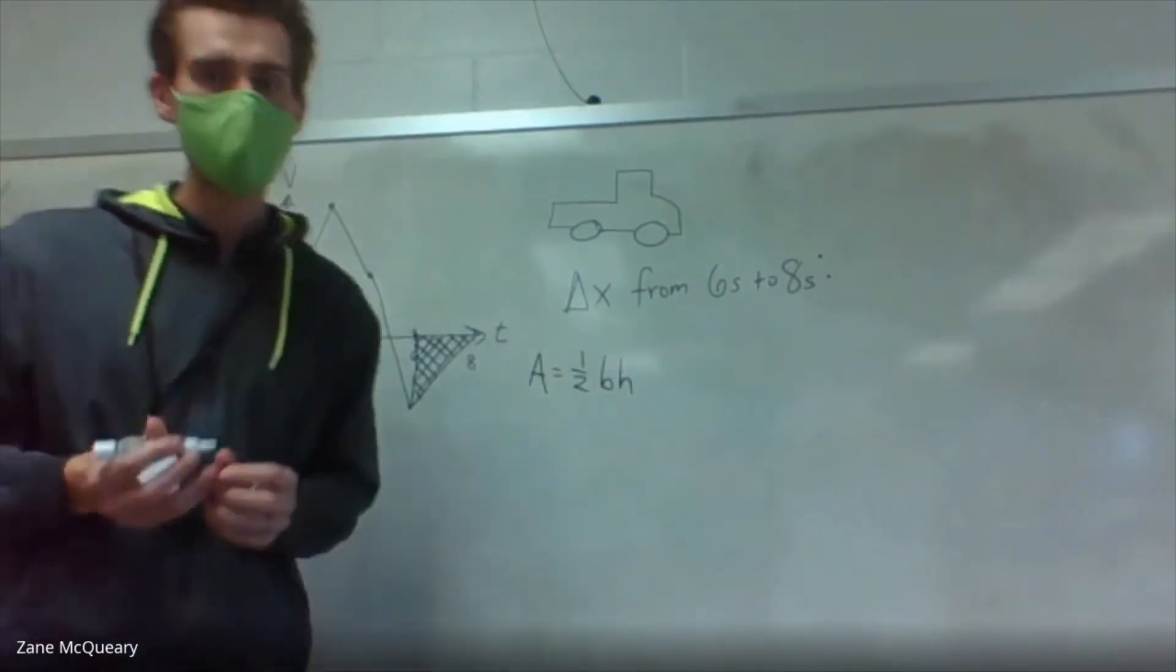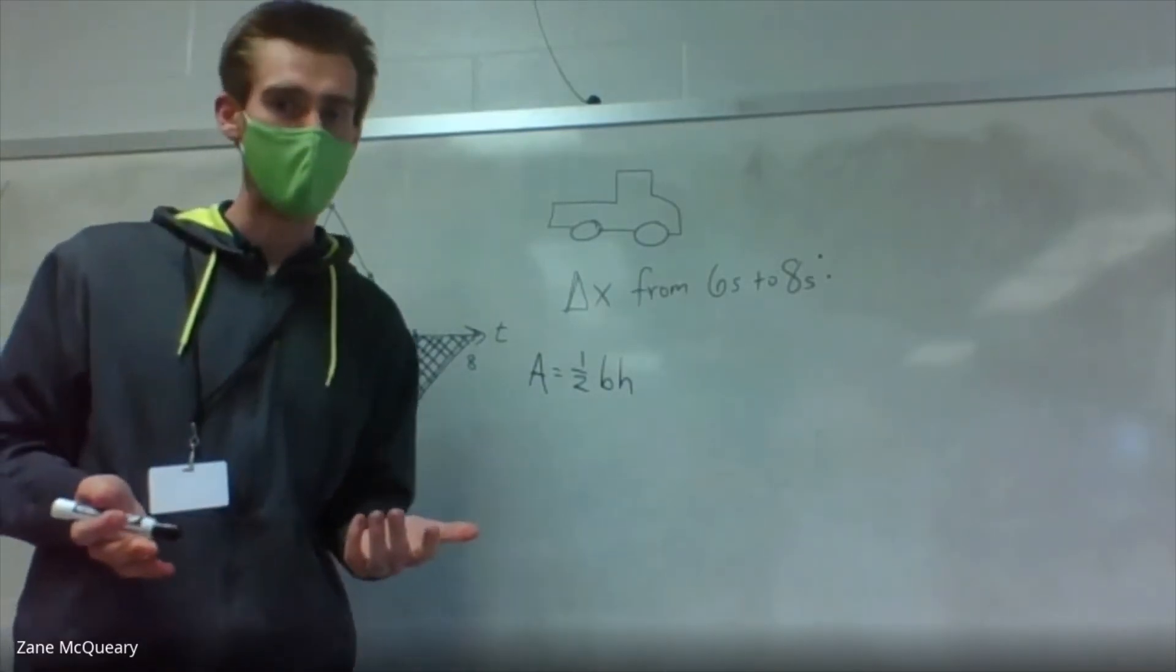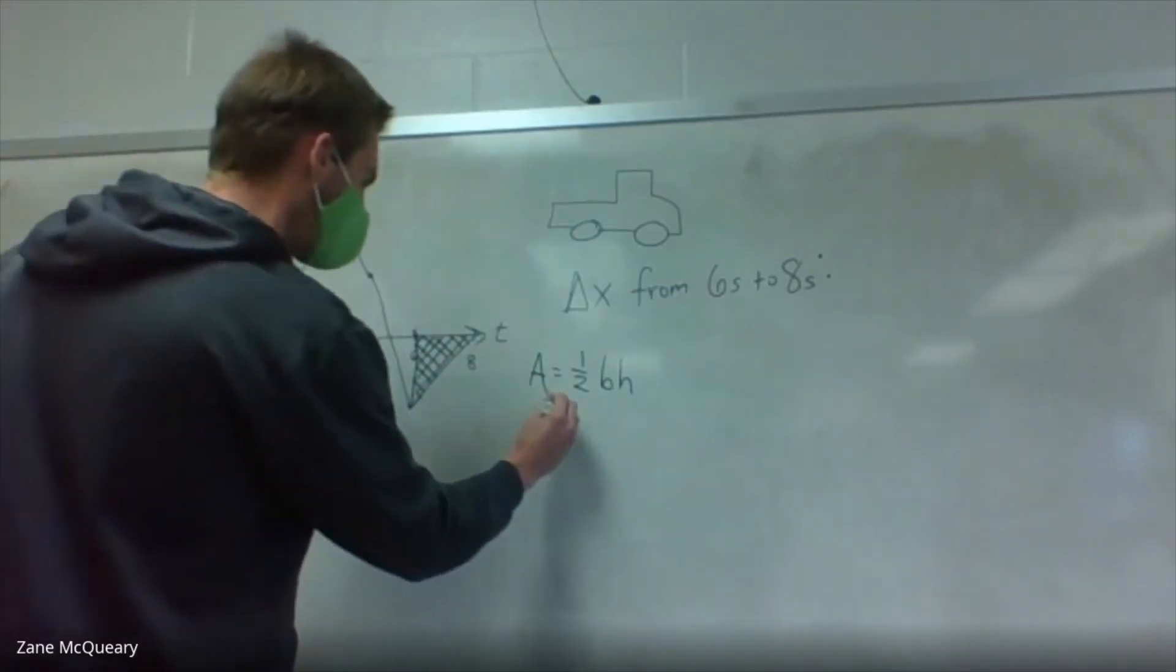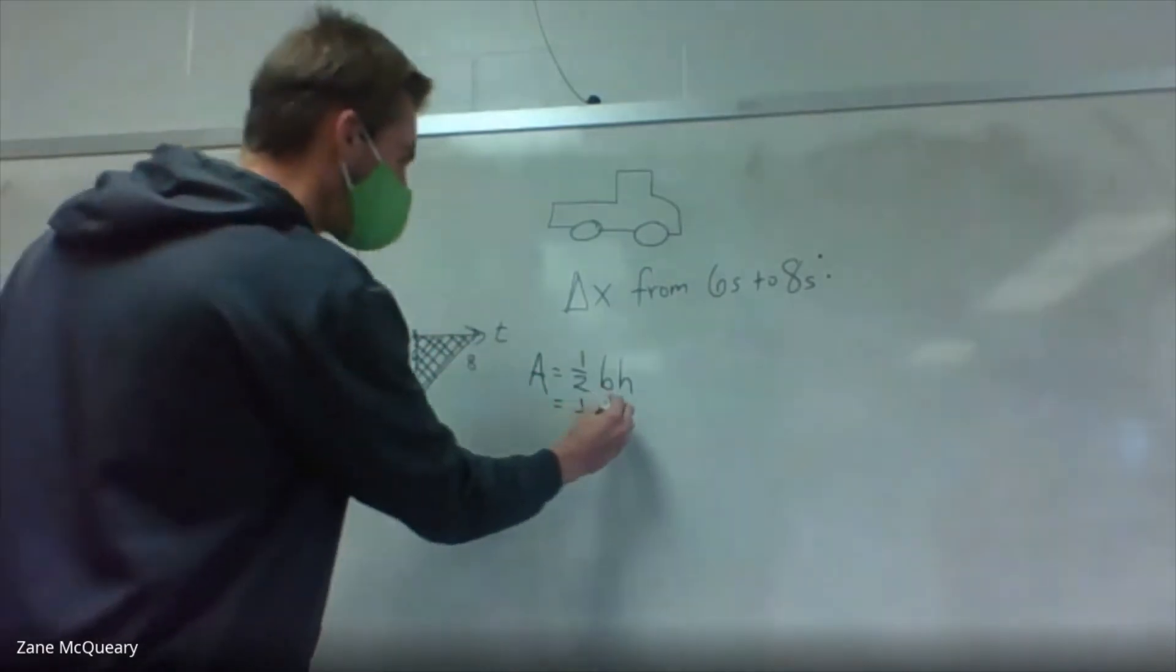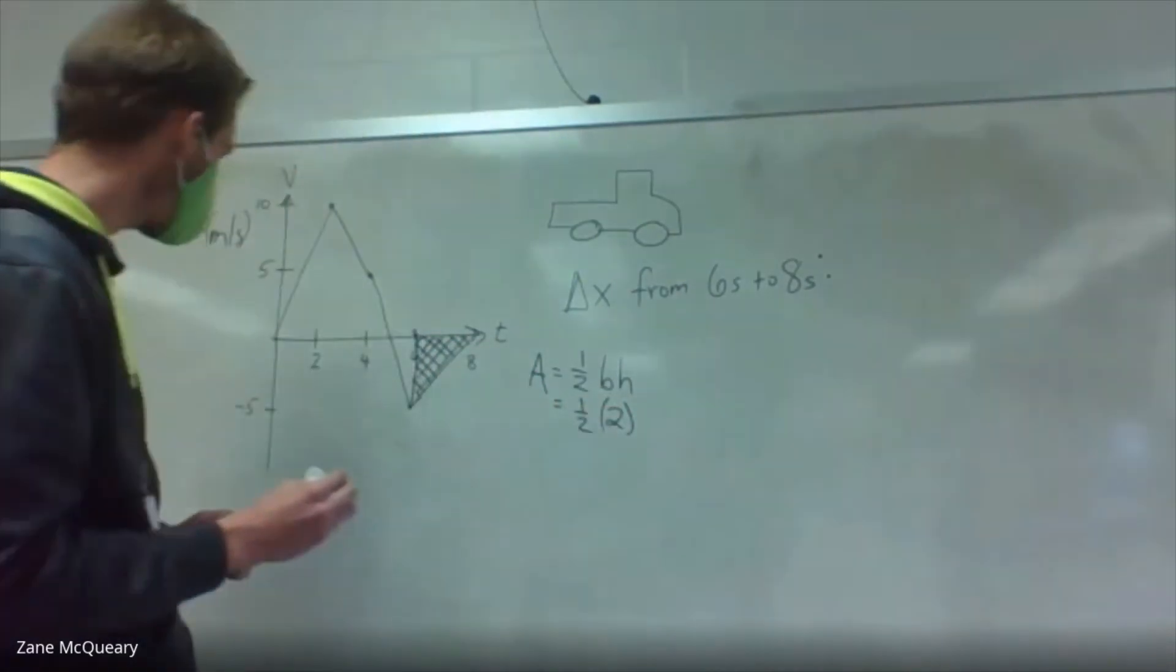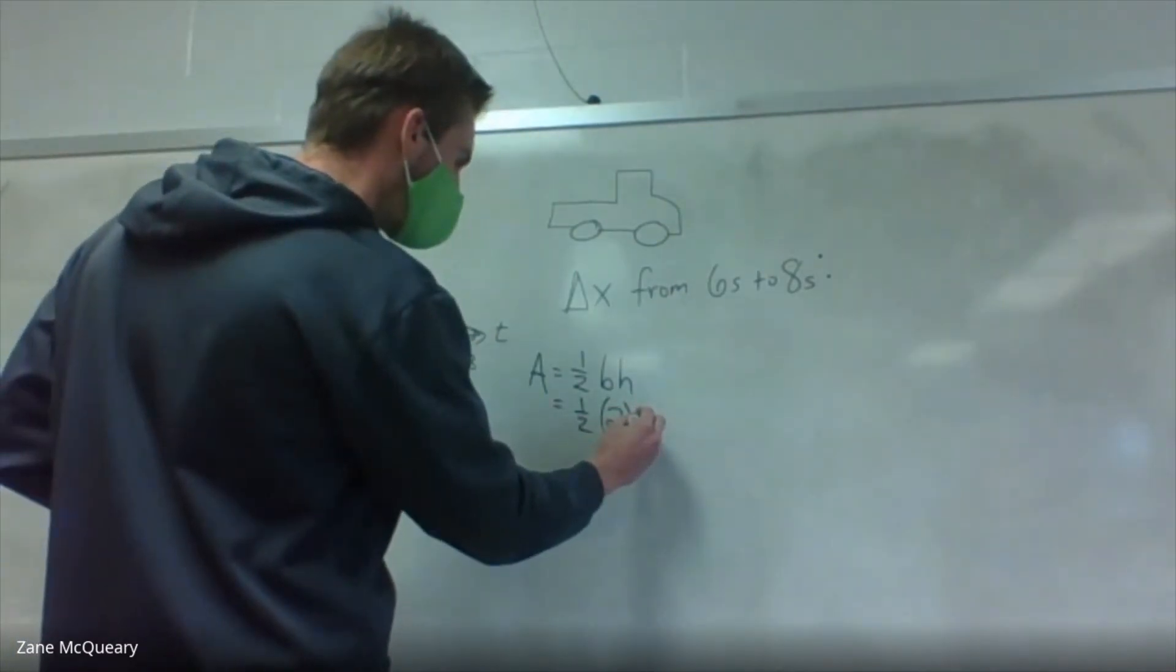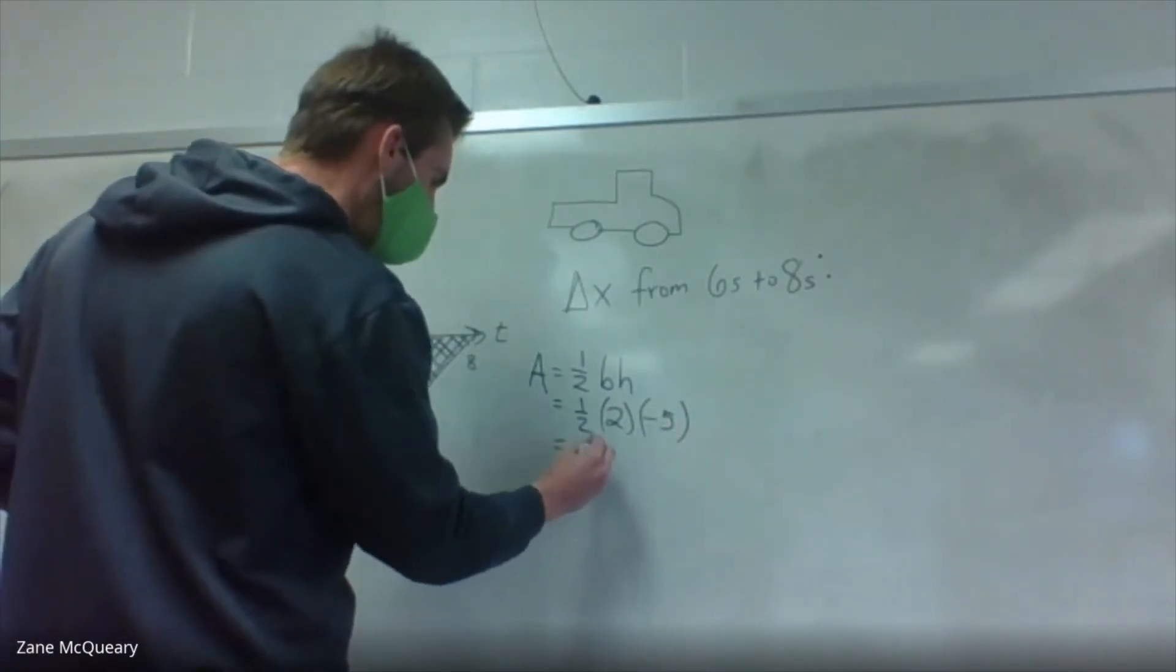And it's not always going to be a triangle in these problems. Sometimes you might have a rectangle or a trapezoid to figure out. Our base in this case looks like it is from six to eight, so it is two. Our height is from zero to negative five. And when we simplify that, we have an area of negative five.